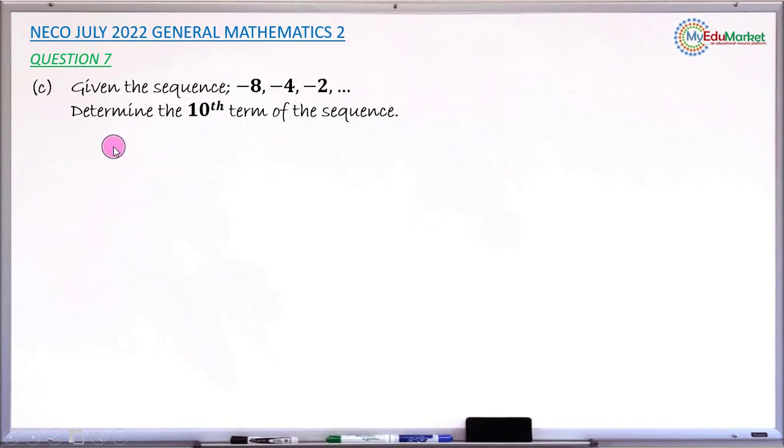Let's solve this together. The solution starts by copying the given terms: -8, -4, -2. You need to look at these three terms and discover what happens between them.